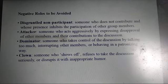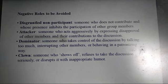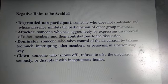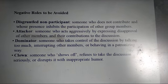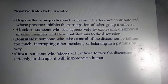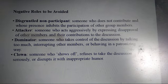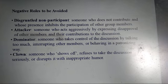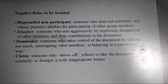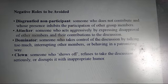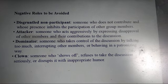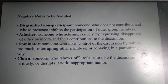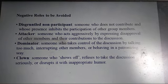Then, Attacker — someone who acts aggressively by expressing disapproval of other members and their contributions to the discussion. Then, Dominator — someone who takes control of the discussion by talking too much, interrupting other members, or behaving in a patronizing way. Then, Clown — someone who shows off, refuses to take the discussion seriously, or disrupts it with inappropriate humor.